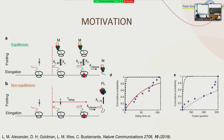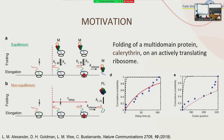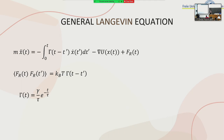Another motivation is that non-Markovian systems are not at equilibrium. In particular, from an article by Bustamante where they study protein folding, they observed a delay in that folding, and in particular that delay time is exponential. The dots are the data, the curve is an exponential fit, and the dashed line shows what they would expect if the system were at equilibrium.